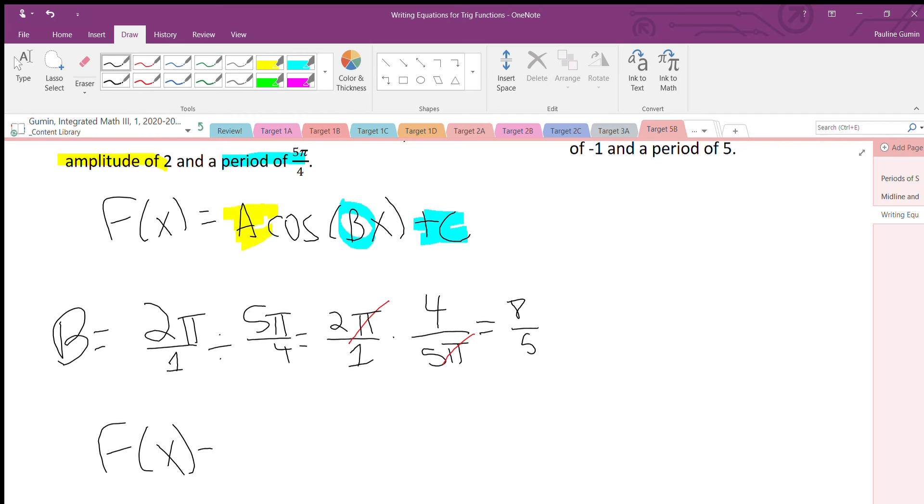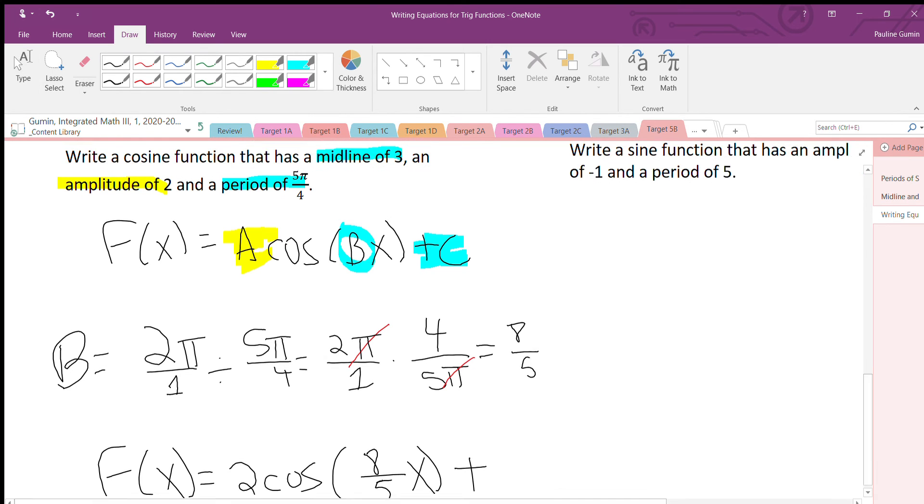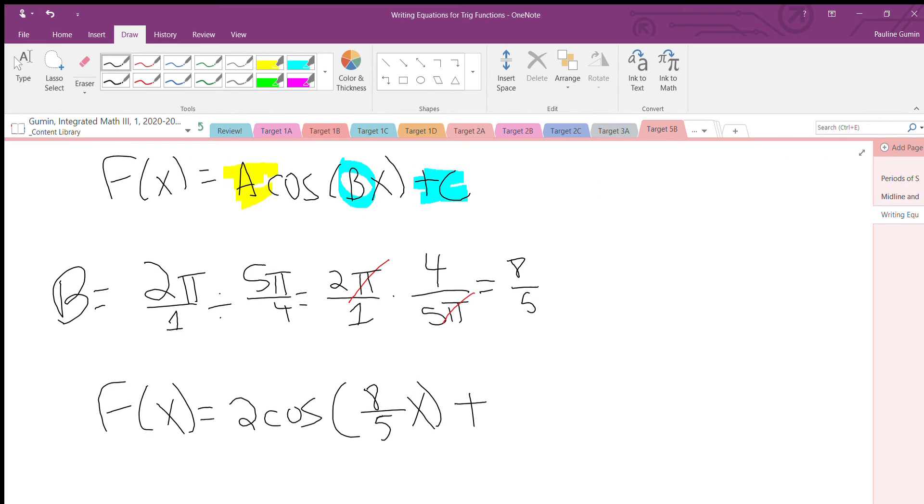My equation is amplitude is 2. Plug that in. My B value is 8 fifths. My midline was 3. It's a positive 3. So I write plus 3.